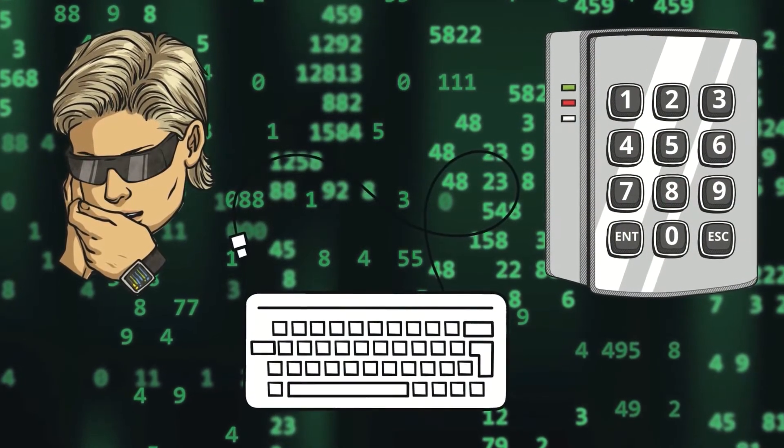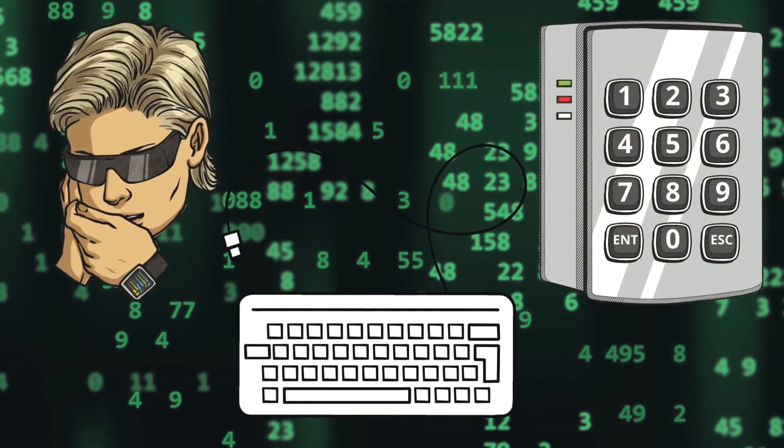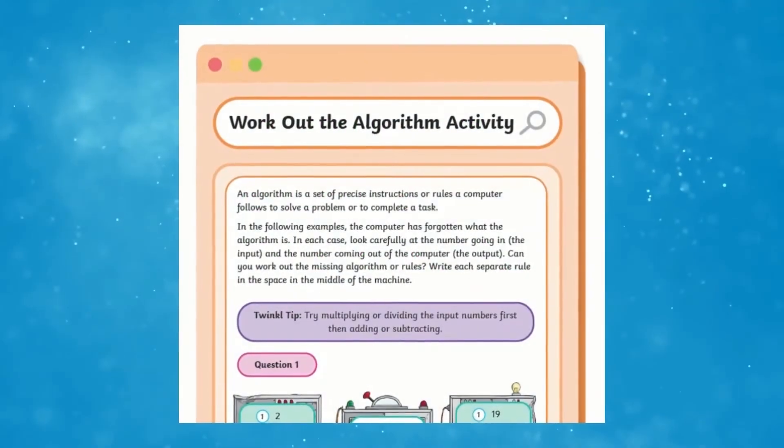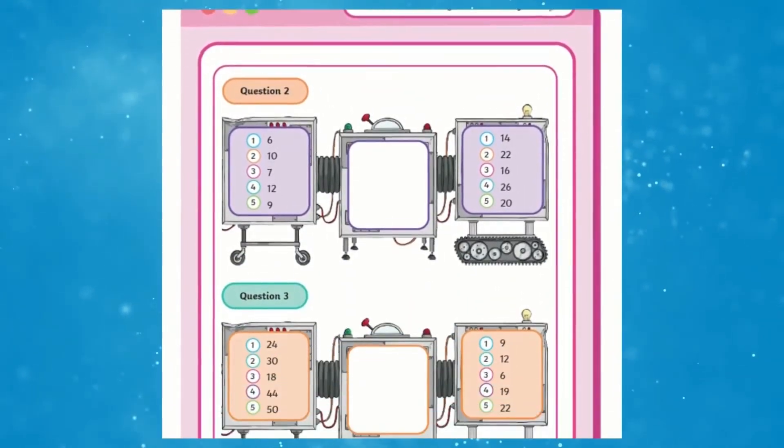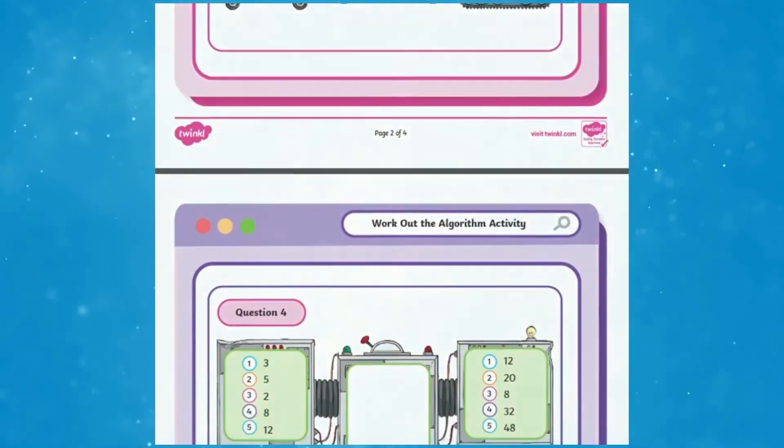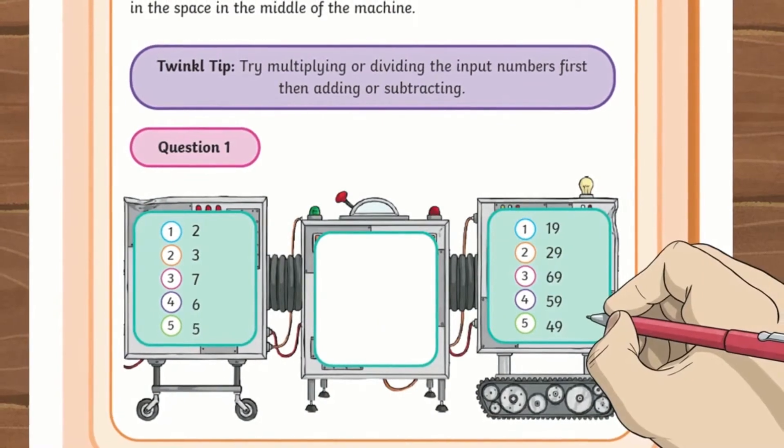Looking to develop your children's coding skills? In this resource, children are given a set of numbers that go into a computer and a set of numbers that come out. Children are challenged to work out what the algorithm is. For example, what rules have been applied to the input numbers to create the output numbers?